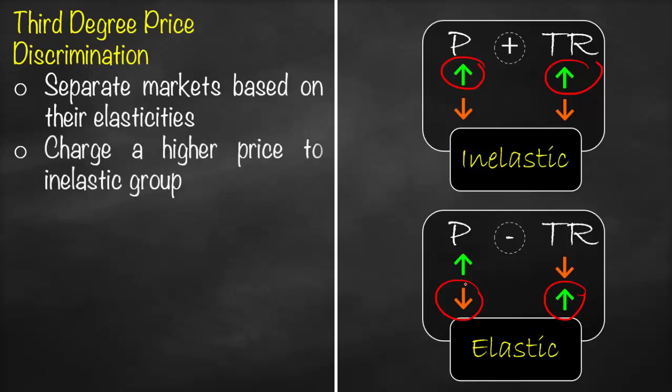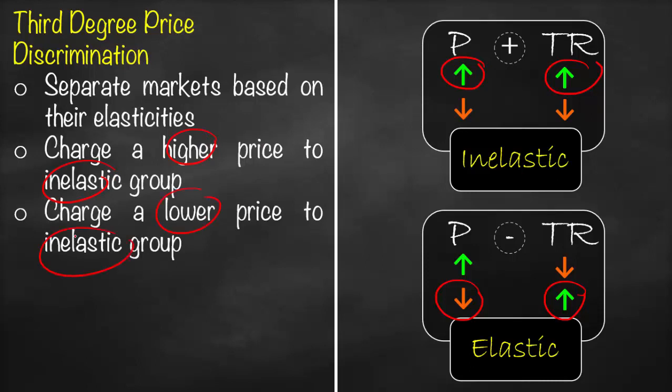Therefore for third degree price discrimination, we're going to separate the markets based on elasticity, so we will have two groups, elastic and inelastic. We will charge higher prices for the inelastic and lower prices for elastic. An example of this one is airlines.